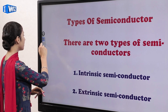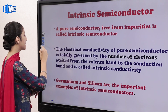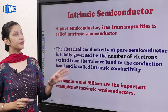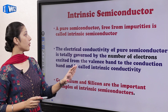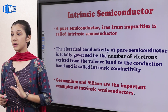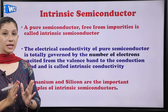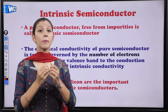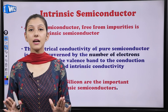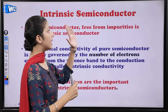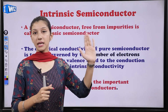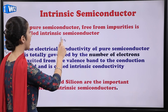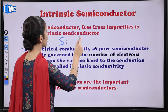Starting with the first case, that is the intrinsic semiconductor. A pure semiconductor free from impurities is called an intrinsic semiconductor. Jis semiconductor ke beech mein koi bhi impurity na ho, usko hum intrinsic semiconductor bolte hain. Inke examples hain silicon and germanium.